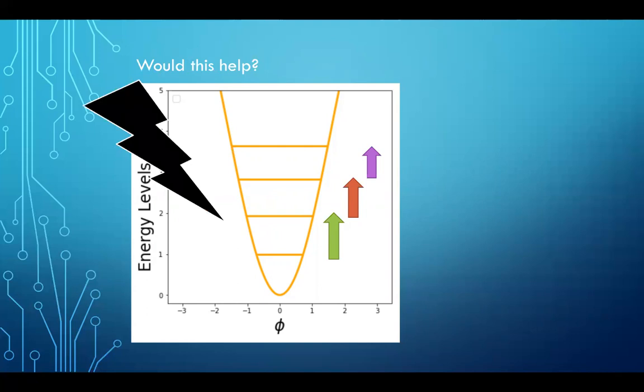So now if we shine light on it, and we control the frequency of the light, such that only the jump from the ground state to the first excited state, that is a green arrow, if only that is possible, then we do have a two-level system. The light is only at the right frequency for the jump from the ground state to the first excited state. It is not at the right level for the jump associated with the red arrow or the purple arrow or indeed any other arrows. So the circuit can only be in the ground state or the first excited state. We have a two-level system now.